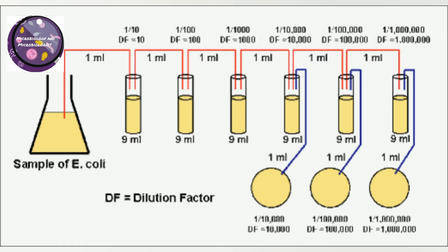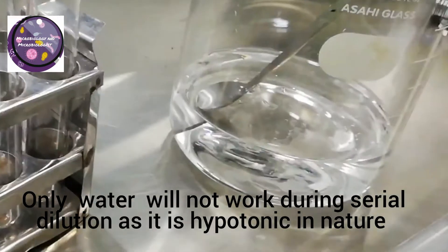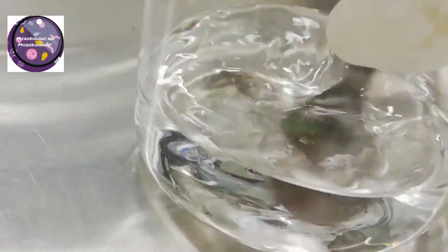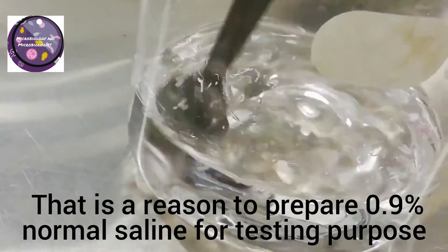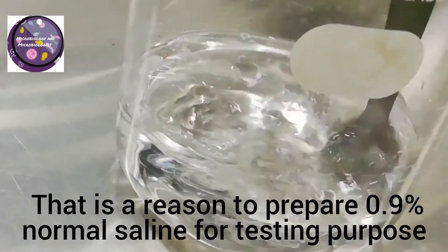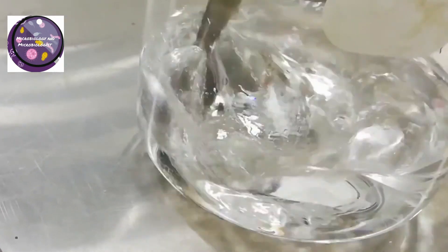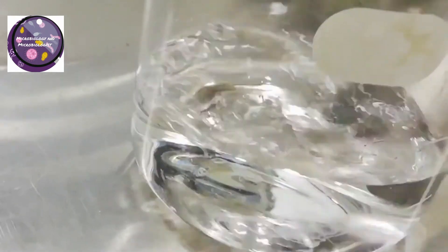This is why we don't use only water for serial dilution. Water is hypotonic in nature, in which the concentration of solute is greater inside the cell than outside. Due to this reason, water tries to enter inside the bacterial cell. The osmotic pressure developed by water on the bacterial cell can damage the cell during serial dilution.